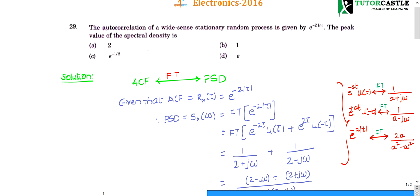Question number 29: the autocorrelation of a wide sense stationary (WSS) random process is given by 2e^(−2|τ|). The question asks for the peak value of the spectral density. This is a very simple question that repeats in the GATE exam, so one can solve it easily.